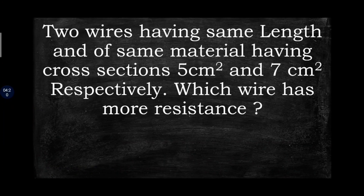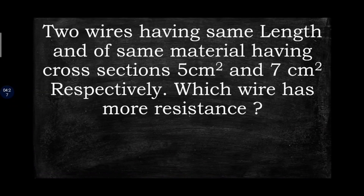Cross-sectional area is inversely proportional to resistance. So the wire with a smaller cross-section area will have more resistance. In this case, since the 5 cm² wire has a smaller area, its resistance will be greater.